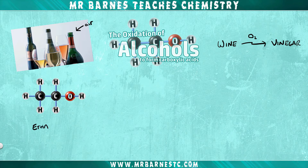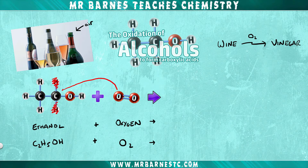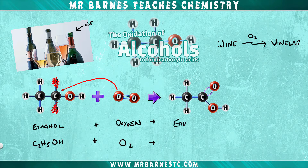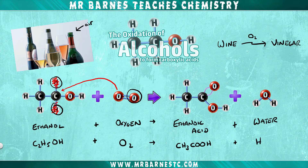Ethanol, which has the formula C2H5OH, collides with the oxygen O2 in the air and removes two hydrogens from the carbon attached to the hydroxyl group. One of the oxygens forms a double bond, making your carboxylic acid — ethanoic acid — with the formula CH3COOH. The two hydrogens that were removed react with the remaining oxygen, forming water H2O as the byproduct.